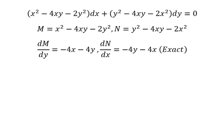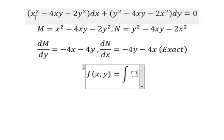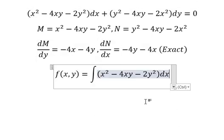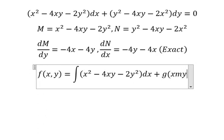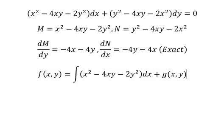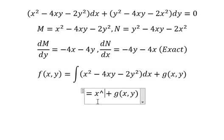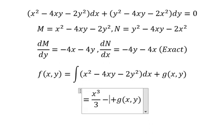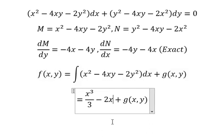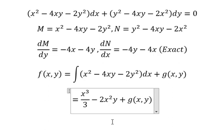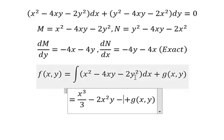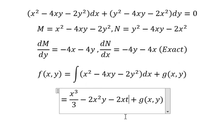Now we need to set up the function f(x,y) equals to the integration, so I will put this one plus g(y). The integration of x — that is about x to the power of 3 over 3. The next one that is about 2x squared y. The next one, because we don't have x, we got about 2xy squared.